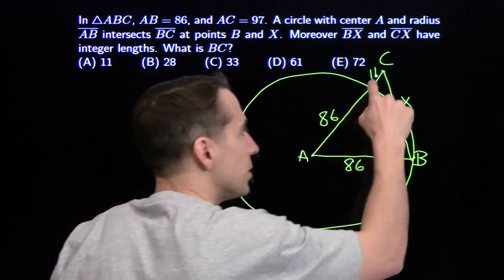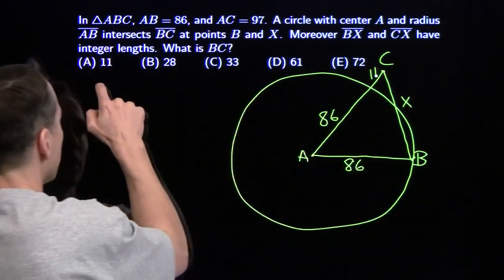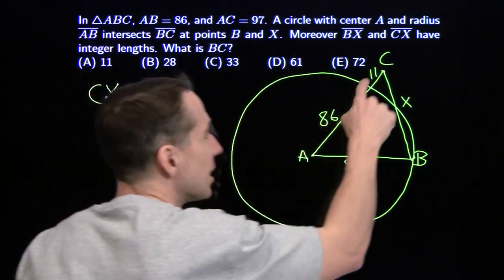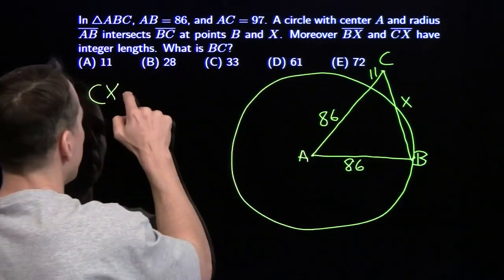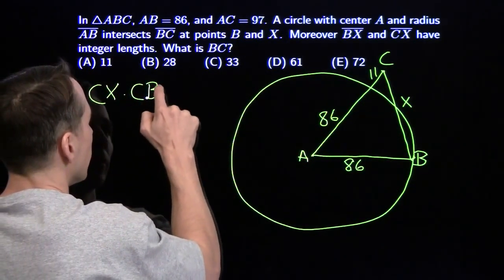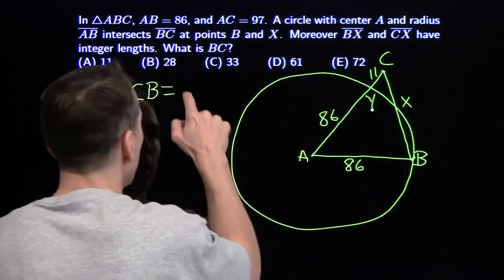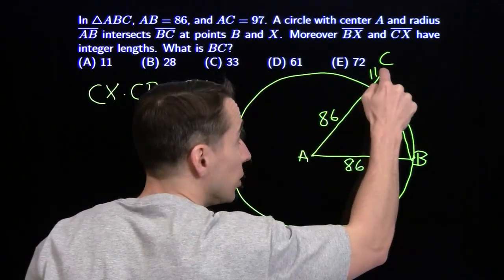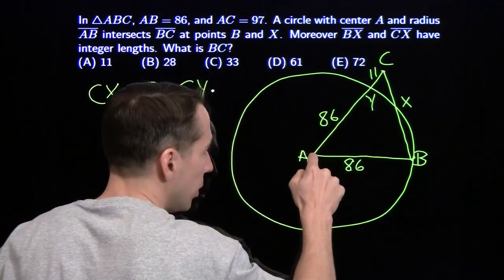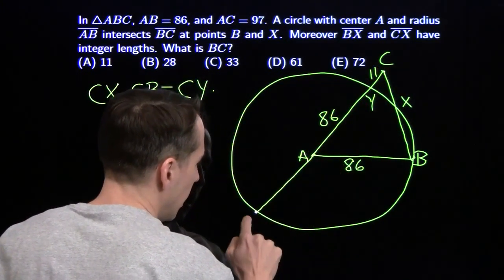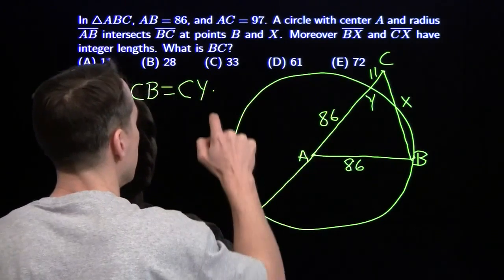Now, power of a point tells us that CX times CB equals this length right here, I'm going to call that point Y, CY, times what you get if you continue CY all the way through the circle, and hit at the other side, CZ.